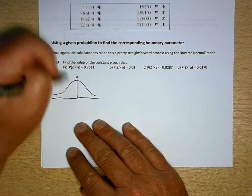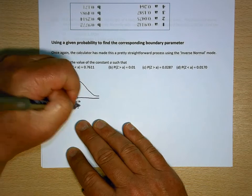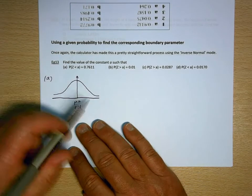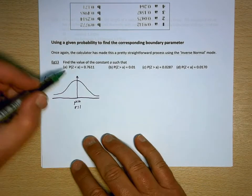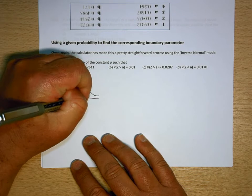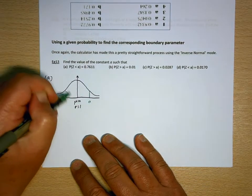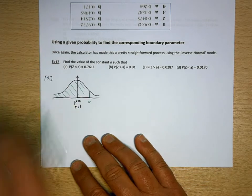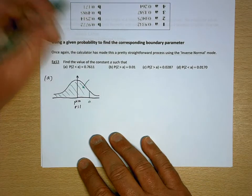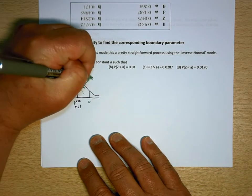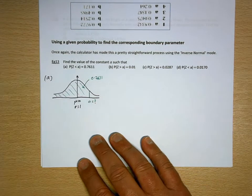So I know this is the standard normal distribution, so it'll have a mean of 0, standard deviation of 1. The total area underneath that curve is 1, so for it to be less than 0.7611, that's going to be up there somewhere, because this one is symmetrical about the mean. And I know that the area that I'm looking for there will have an area of 0.7611, and I want to find a.